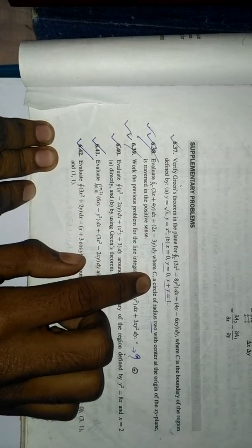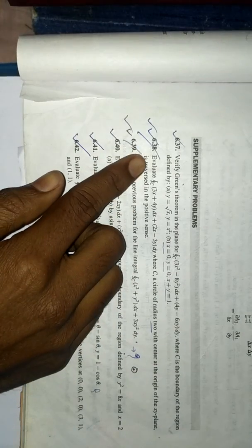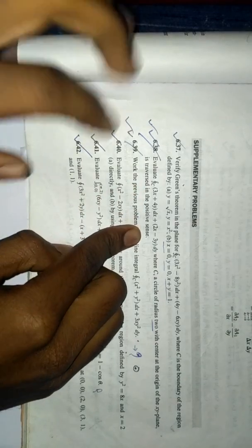The integral is 3x plus 4y dx plus 2x minus 3y dy, where C is a circle of radius 2 with center at the origin of the XY plane, traversed in positive sense. You can see this problem, it's very easy to solve if you do good calculation.